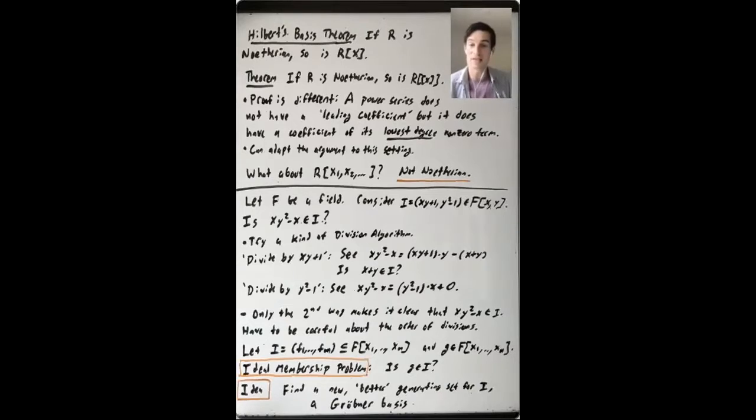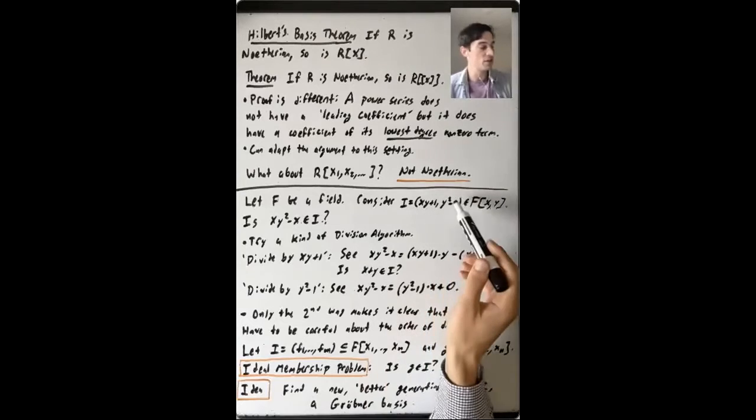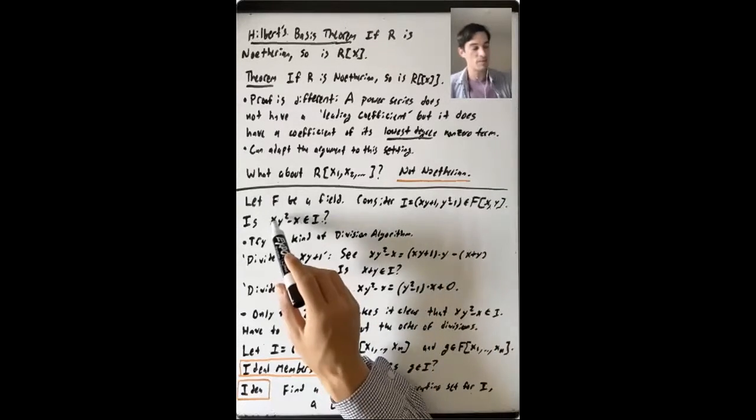And what you would try is something like a division algorithm, right? So I have these two different polynomials in here. And what do I mean try a kind of division algorithm?